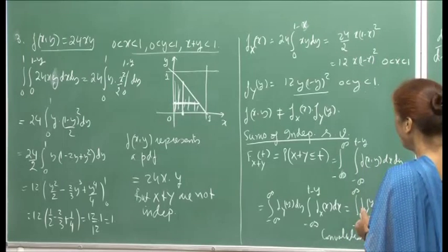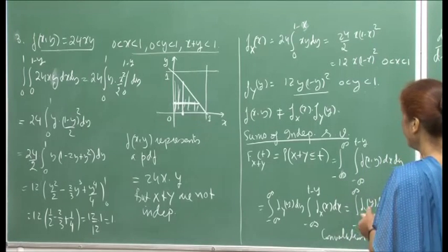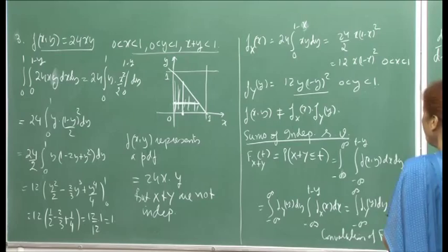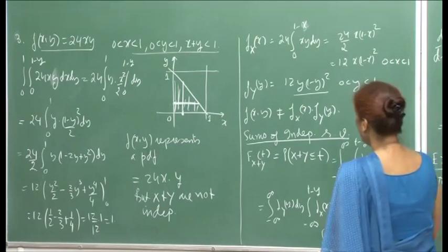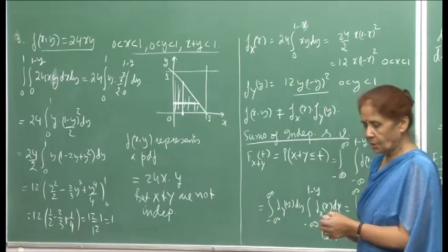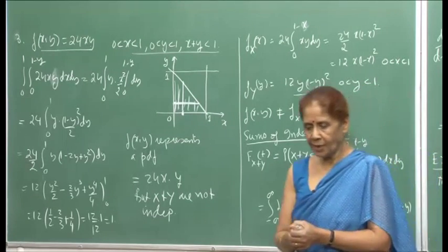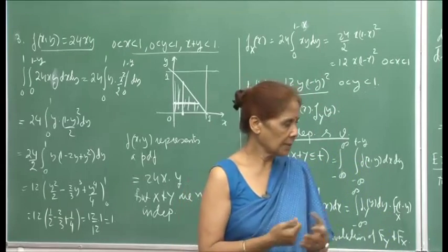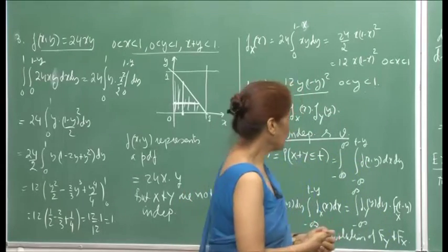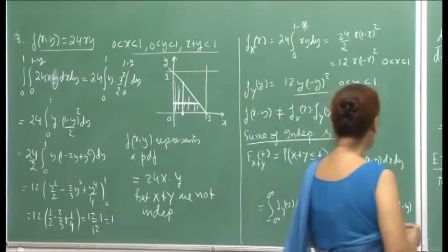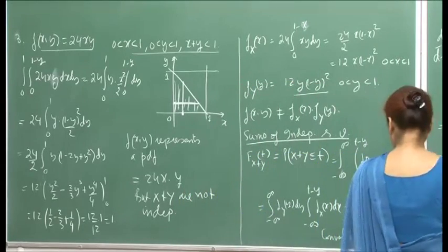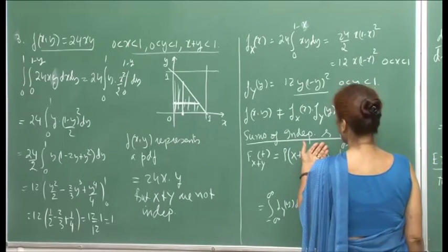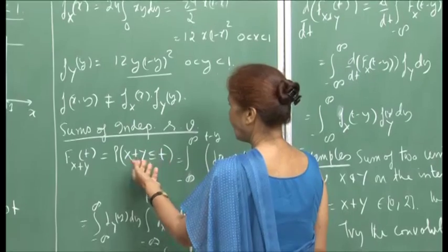Independence is a very important concept that simplifies many things in probability theory. We will now start talking about sums of independent random variables.